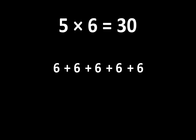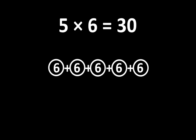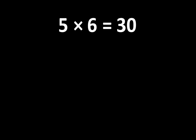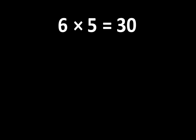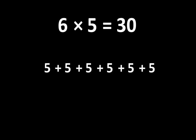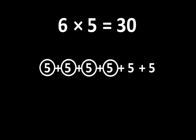If we count the groups of 6, we can see that there are 1, 2, 3, 4, 5 groups of 6, and the total of 5 groups of 6 is 30. And if 5 x 6 is equal to 30, we also know that 6 x 5 is equal to 30. So we can think of 30 as 6 groups of 5. If we count the groups of 5, we can see that there are 1, 2, 3, 4, 5, 6 groups of 5, which is equal to 30.